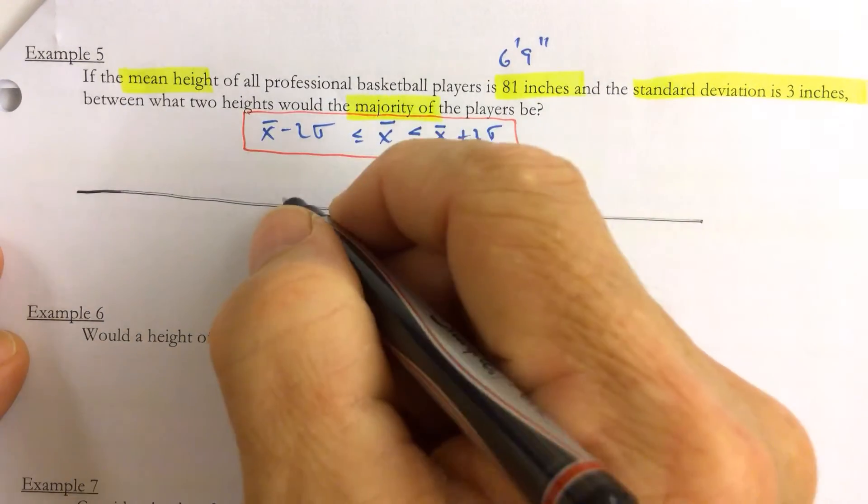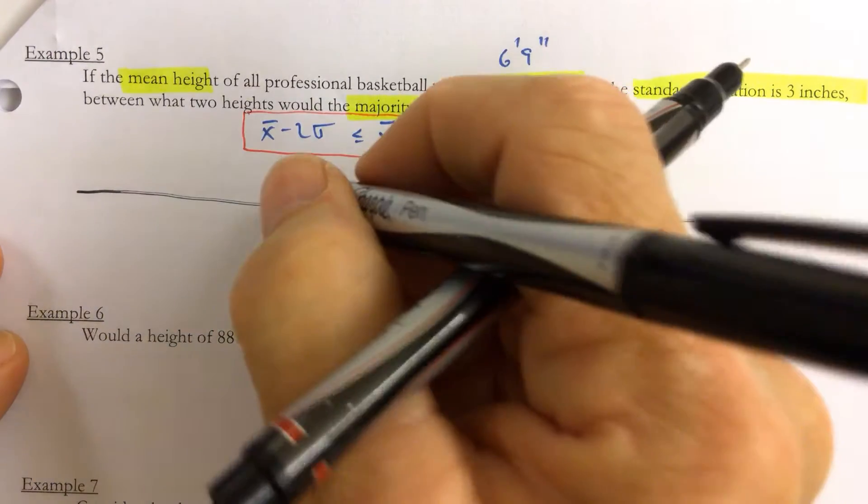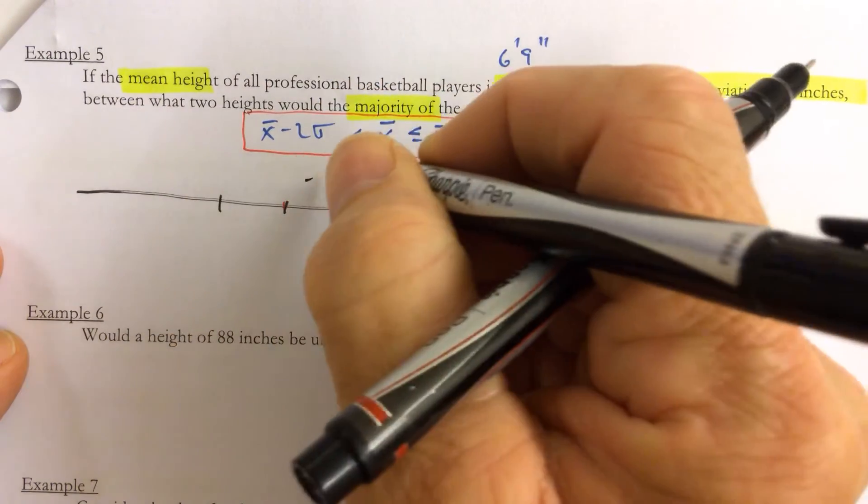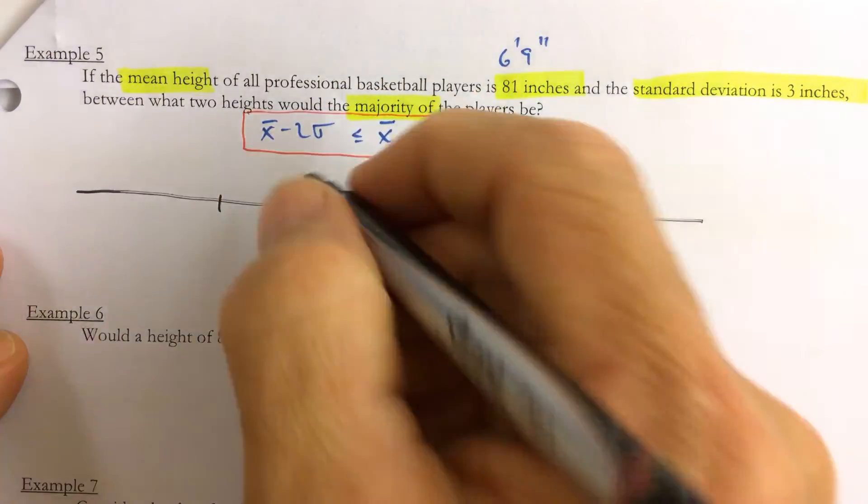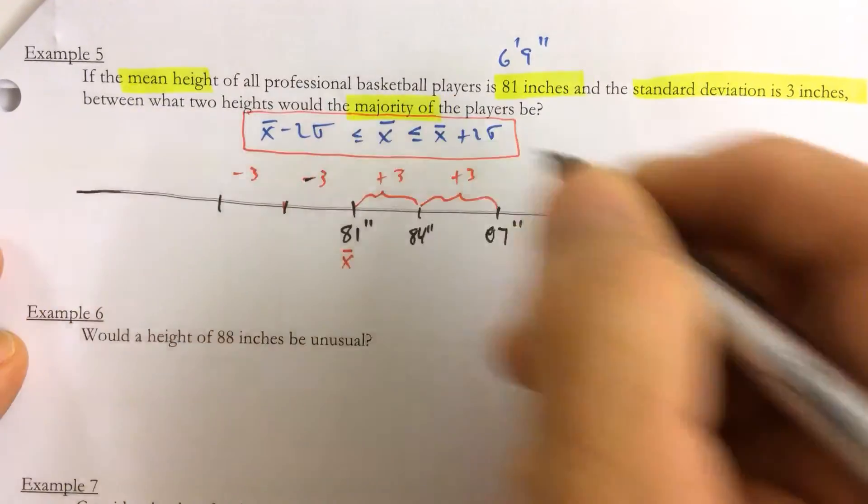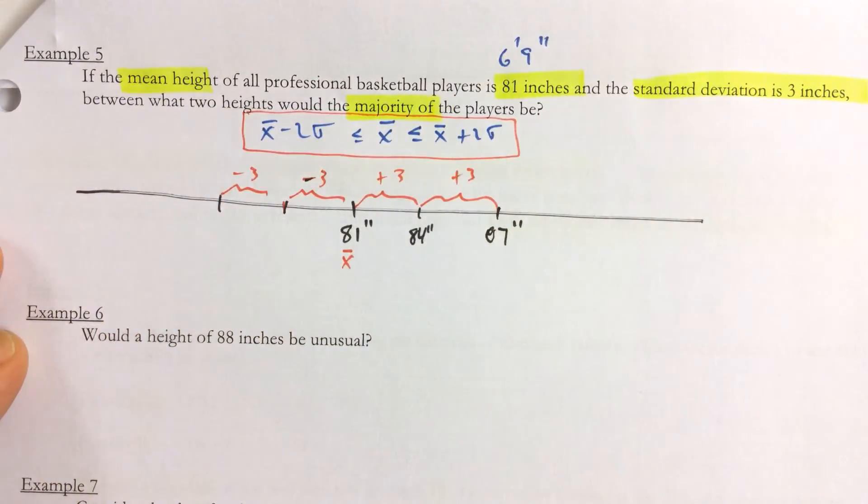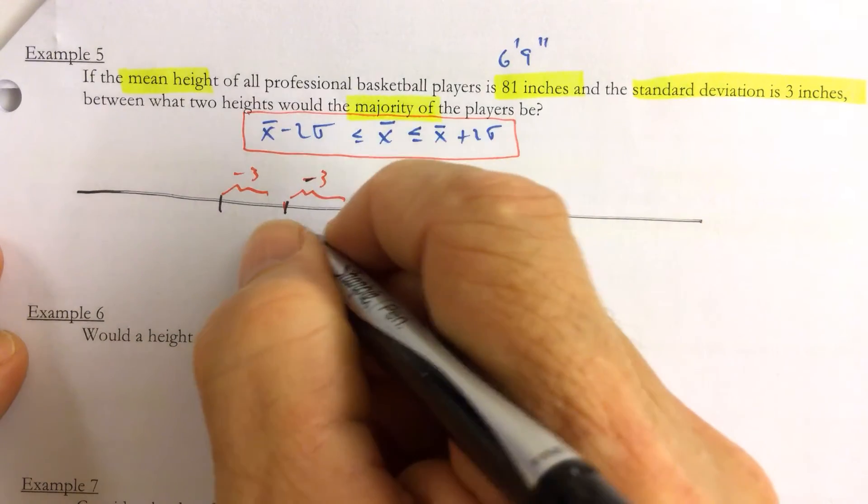And if we subtract three, subtract three, and subtract three—minus three and minus three—then we get 78 inches.